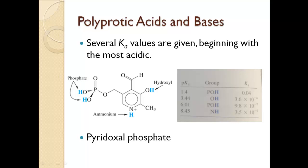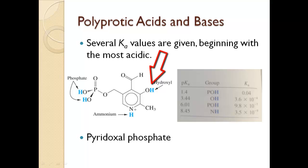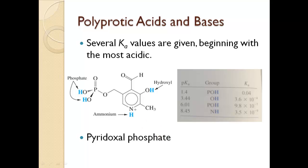For polyprotic acids — acids with multiple protons that can dissociate — you'll have several Ka values. The first Ka corresponds to the most acidic proton. For example, pyridoxal phosphate in its fully protonated form has pK1 = 1.4 (phosphate group), pK2 = 3.44 (hydroxyl on benzene ring), pK3 = 6.01 (phosphate again), and pK4 for the least acidic proton near the ammonium group. Not all protons on a molecule have the same pKa. That does it for this video; next is Section 8.6, weak acid equilibrium.